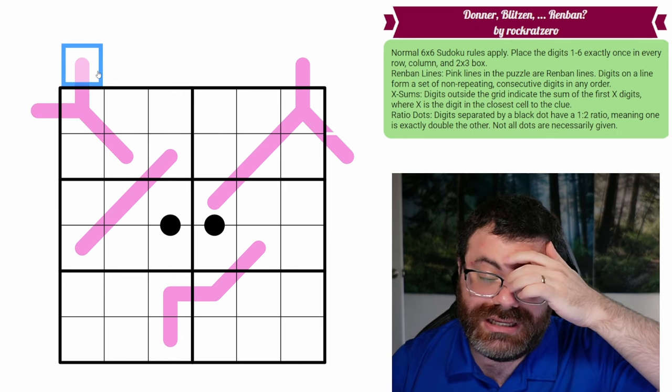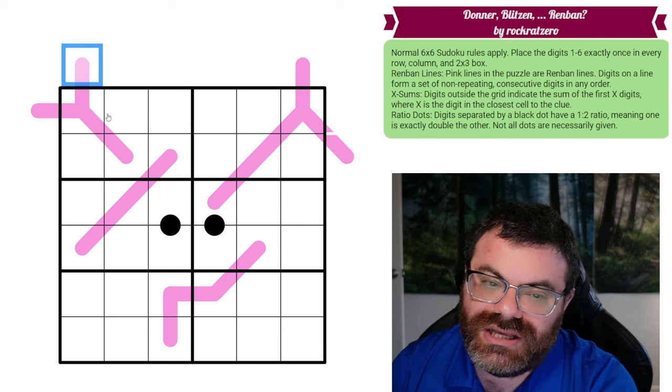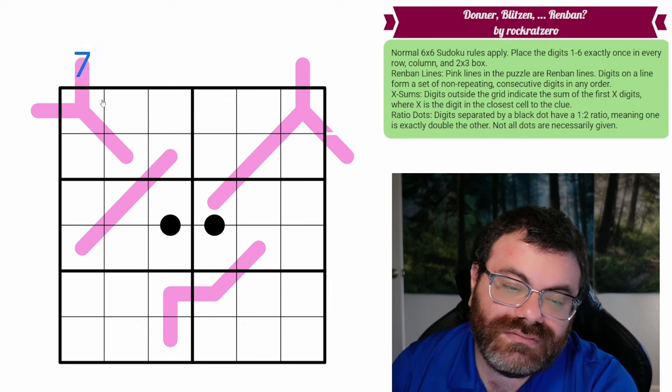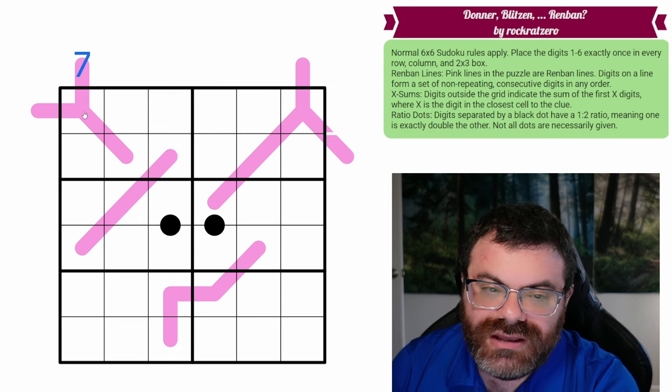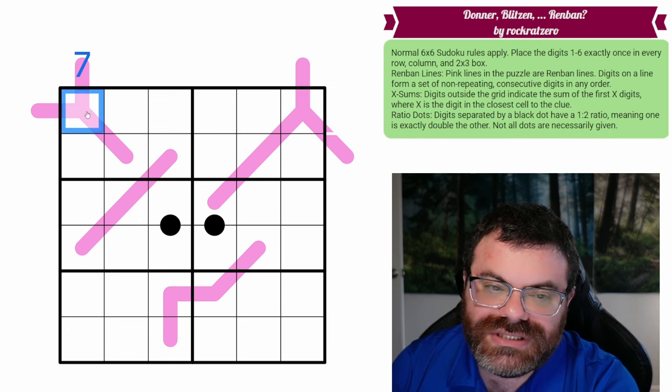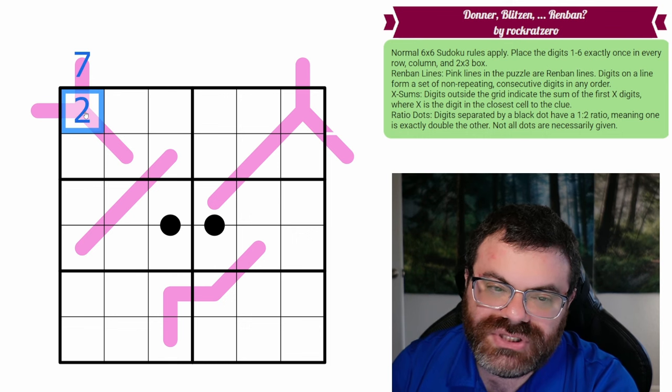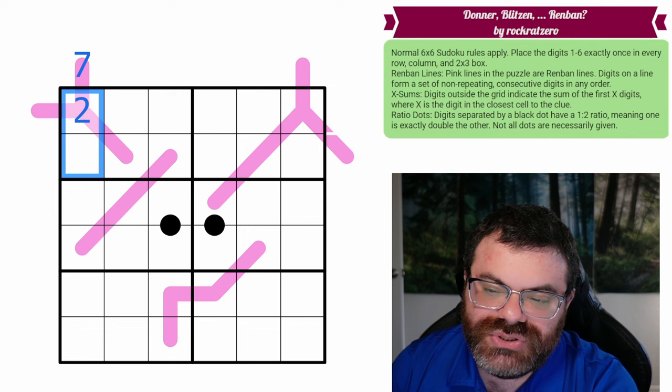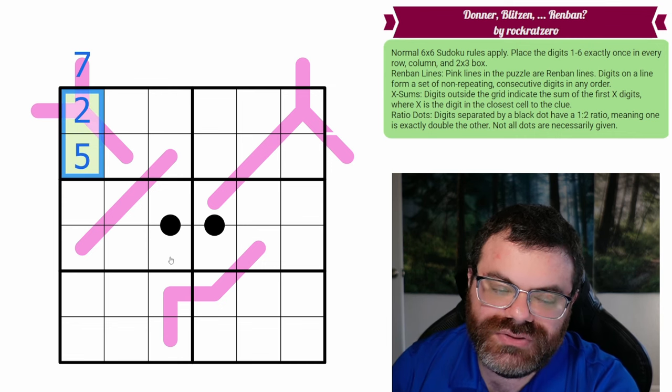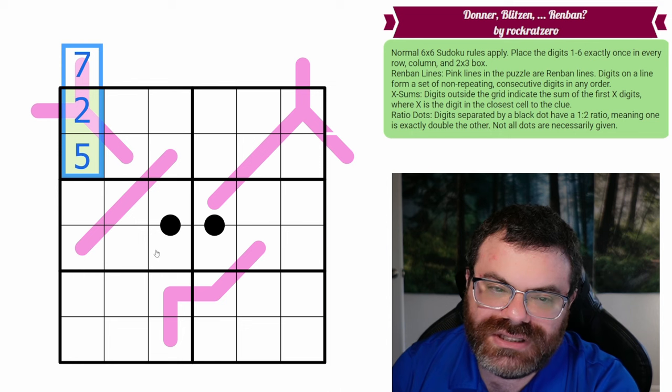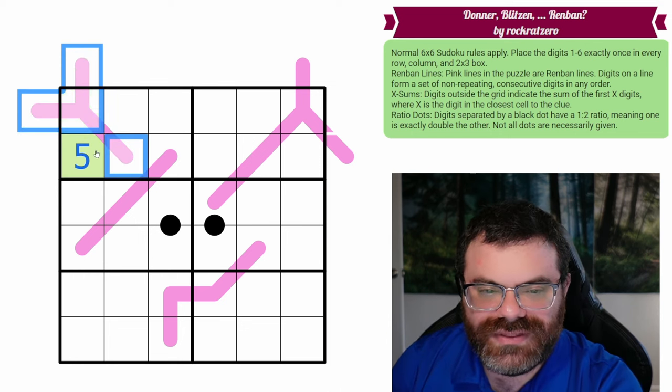Whatever digit we put here is not restricted to Sudoku rules, but it is restricted by the Renband rules, and it counts as an xSum clue. So how do xSum clues work? Well, let's say this was a 7, and it could be a 7 because we're not restricted to 1 to 6. Then we take the digit that it's adjacent to in the puzzle. Let's say it was a 2. That means we're adding two digits together, and they have to add to 7, including the 2. So we do 2, 5.